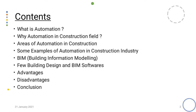These are the contents which we are going to discuss in our presentation. Firstly we will discuss what is automation, why automation in construction industry, areas of automation in construction, some examples of automation in construction industry, BIM, few building design and BIM softwares, advantages and disadvantages of automation in construction, then we will come to the conclusion.